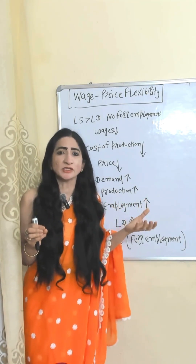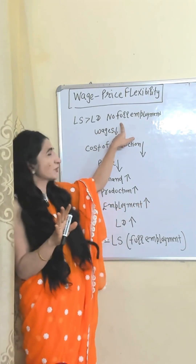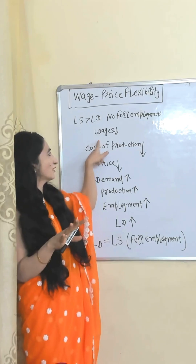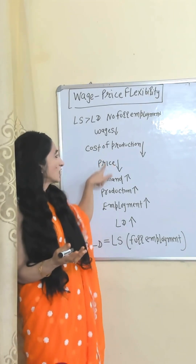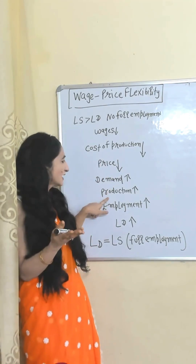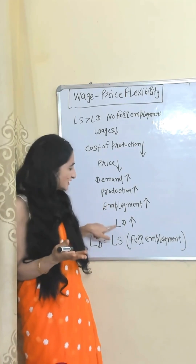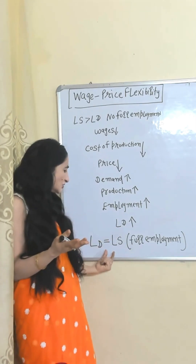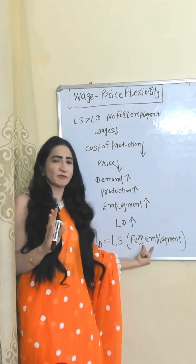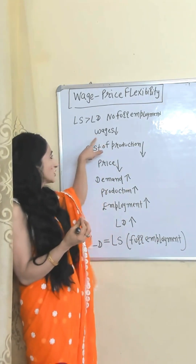Wage-price flexibility means the economy will achieve full employment because prices and wages are flexible. Suppose there is no full employment — labor supply is more than demand. As a result, wages fall, which reduces the cost of production, which reduces prices, which increases demand. Increased demand leads to increased production, which increases employment, so demand for labor eventually becomes equal to supply and the economy achieves full employment.